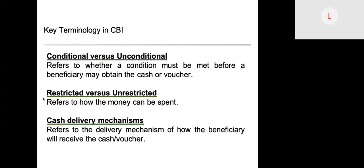Cash delivery mechanisms refers to how beneficiaries will receive the cash or voucher. This could include physical cash in an envelope, bank cards, electronic vouchers, ATM cards, or mobile banking. Key considerations when selecting the transfer mechanism include local availability of services, distances to services, access including safety, service costs and speed, and ease of setting up the mechanism to be used.